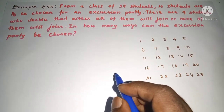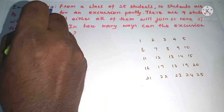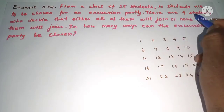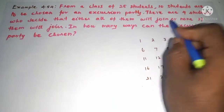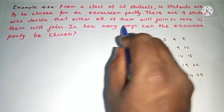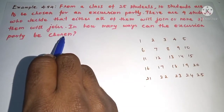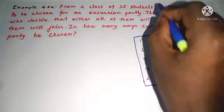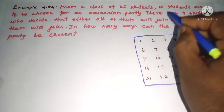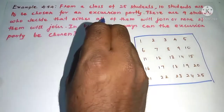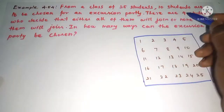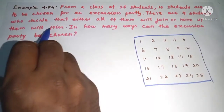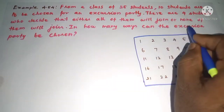Hi students, this is Salama Max Tuition. 11th standard, Example 4.54. From a class of 25 students, 10 students are to be chosen for an excursion party. There are four students who decide that either all of them will join or none of them will join. In how many ways can the excursion party be chosen?